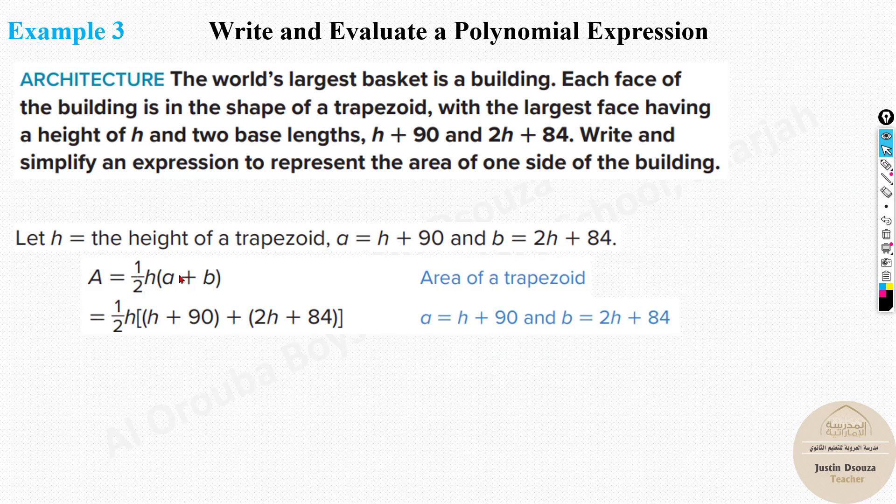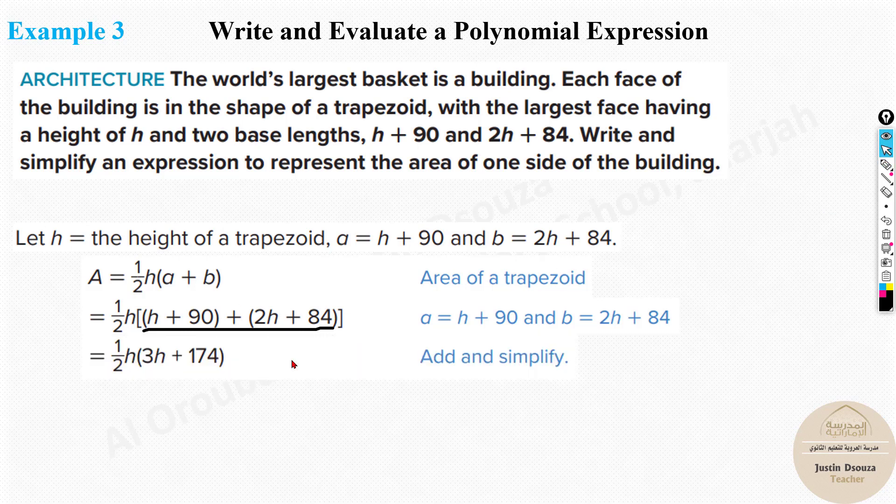Now, first thing is what is inside the bracket. You need to add this up. In the last lesson, we are done adding and subtracting polynomials. That is what we will do now. We will have to add. H plus 2H will be 3H. 90 plus 84 will be 180 minus 6. That is 174. Sorry, 176. I just got confused. Now, it's 3H over here plus 174.